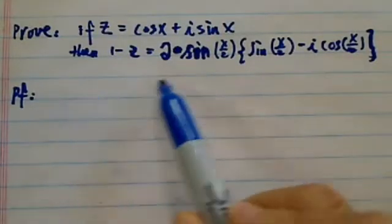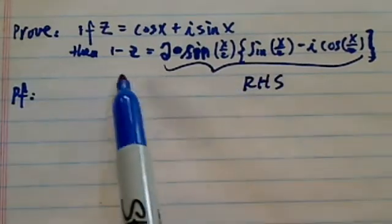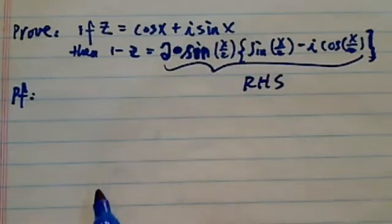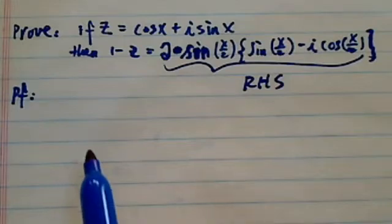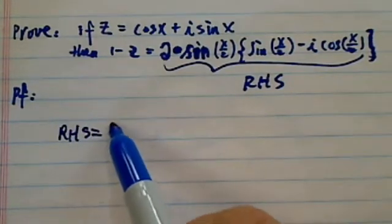Okay, the best way to prove this one is start from the right-hand side because left-hand side, it's just 1 minus z. There's not much to it. Okay, let's do the right-hand side. Let's copy the whole thing.